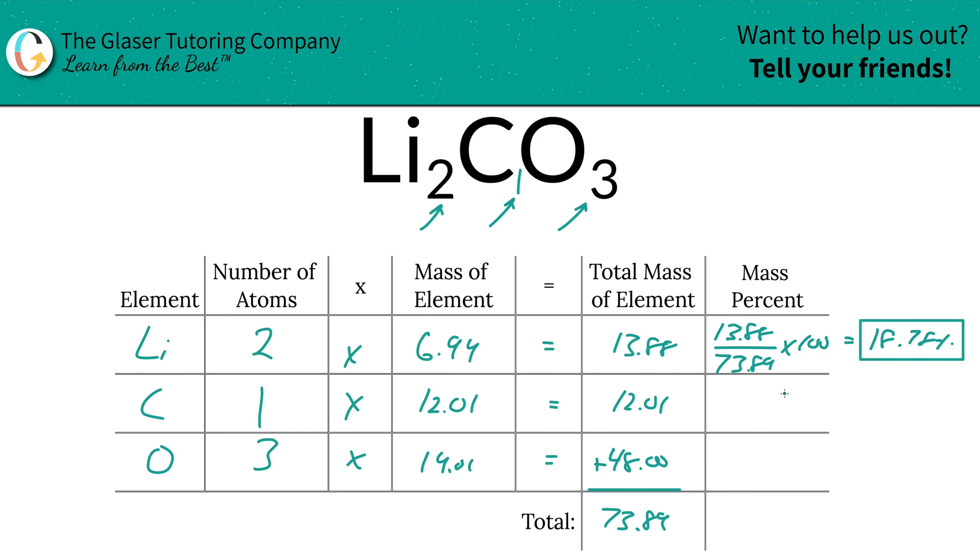Now we're going to do the same thing for carbon. We're going to take the total mass of that carbon, always looking at this column to do this particular step, then divide it by the total mass of the compound 73.89, multiply that by 100. And it's simply going to be 16.25%.